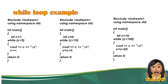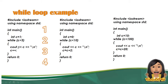Ito yung while loop program na gumagamit ng increment. Sample program: C is equal to 1, while C is less than 5, C out C, and C++. So, this code displays a value of 1, 2, 3, 4 — hanggang 4 lang siya. Bakit? Kasi gumagamit siya ng less than. So, the values less than 5 are 4, 3, 2, 1.